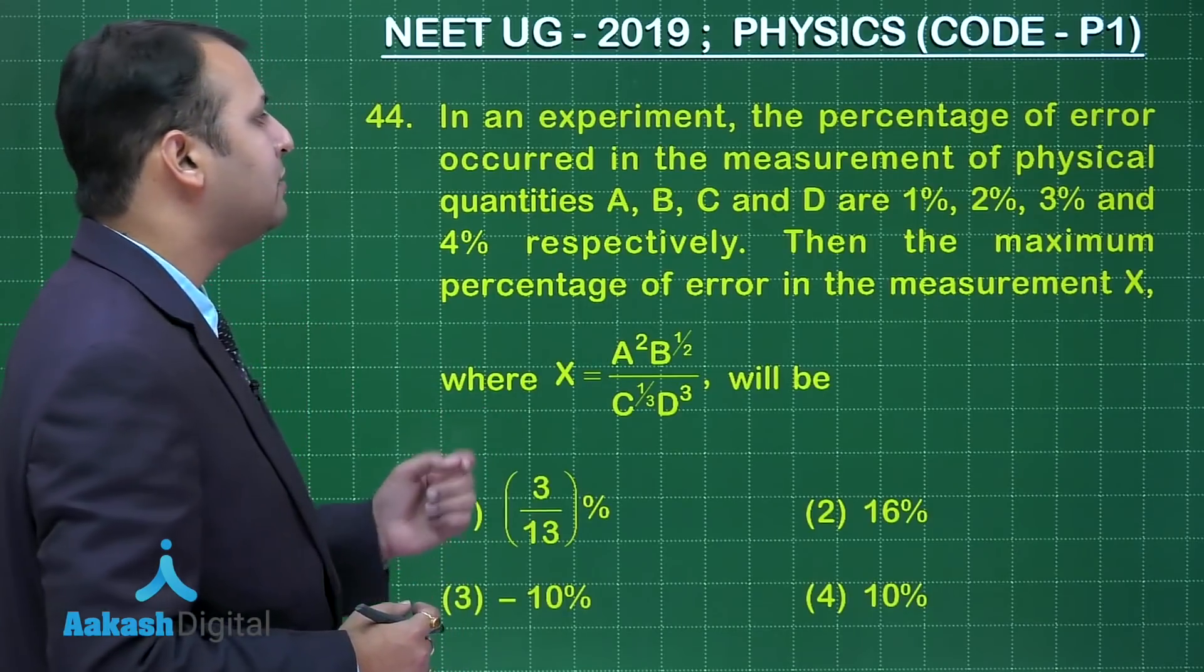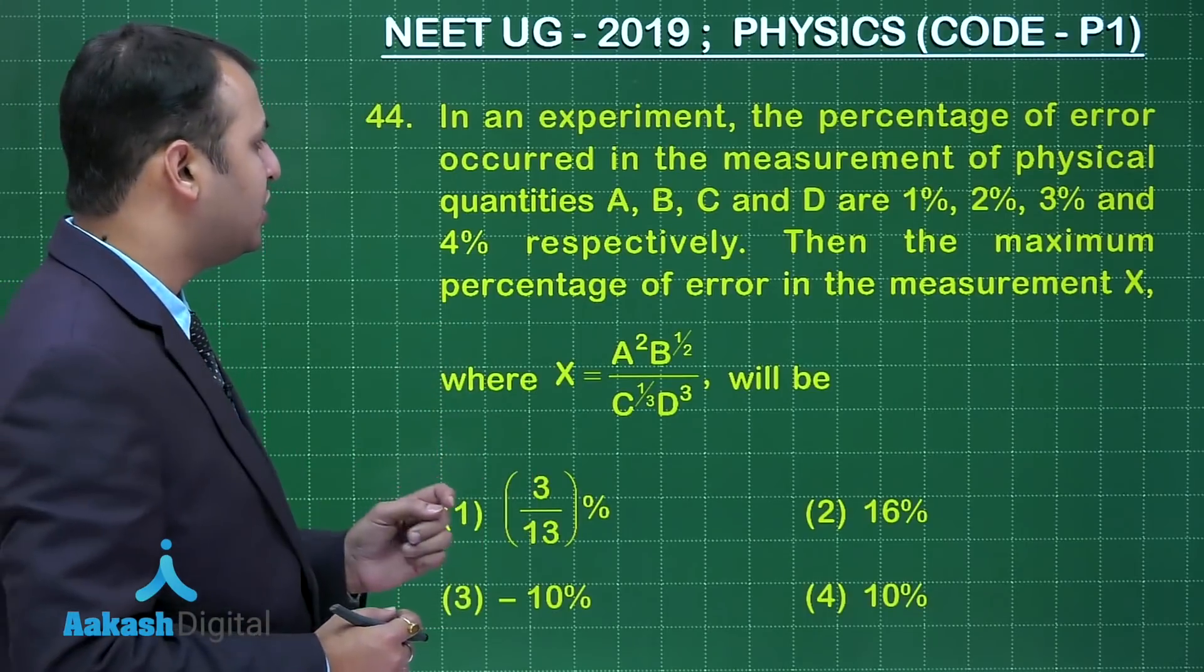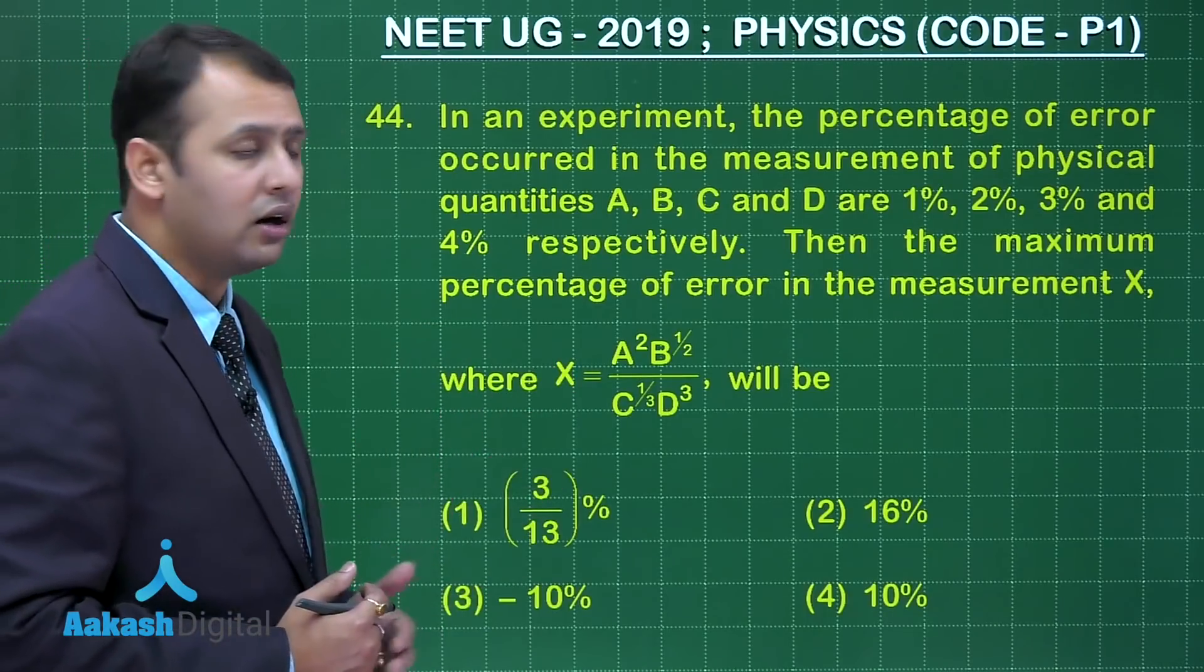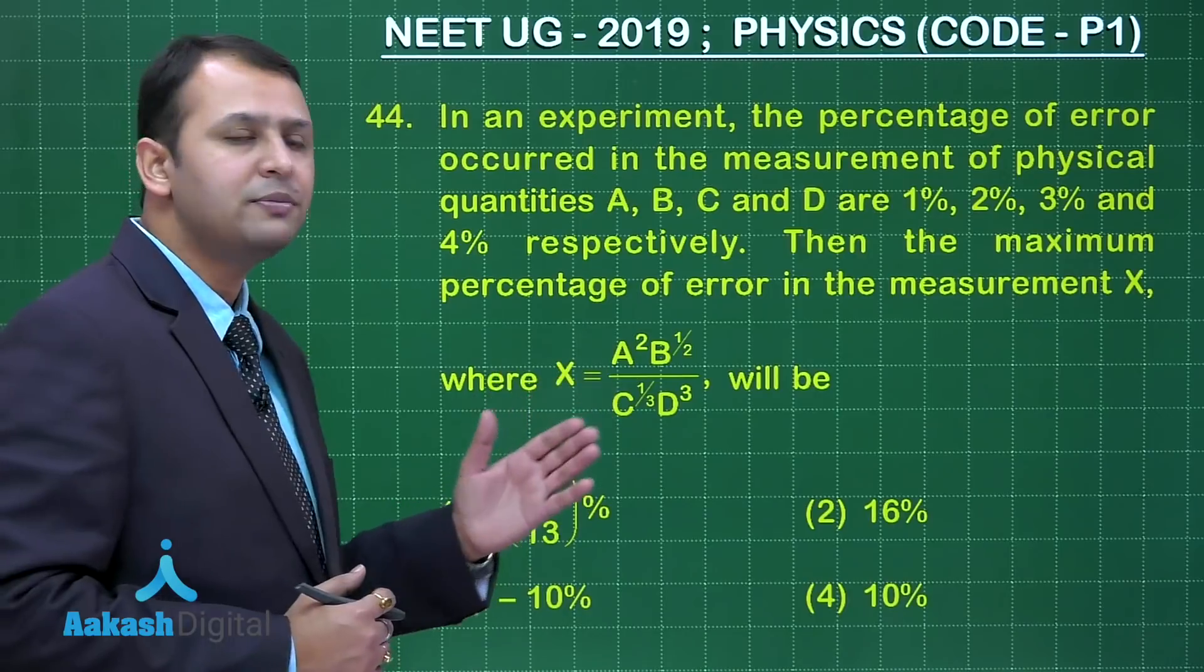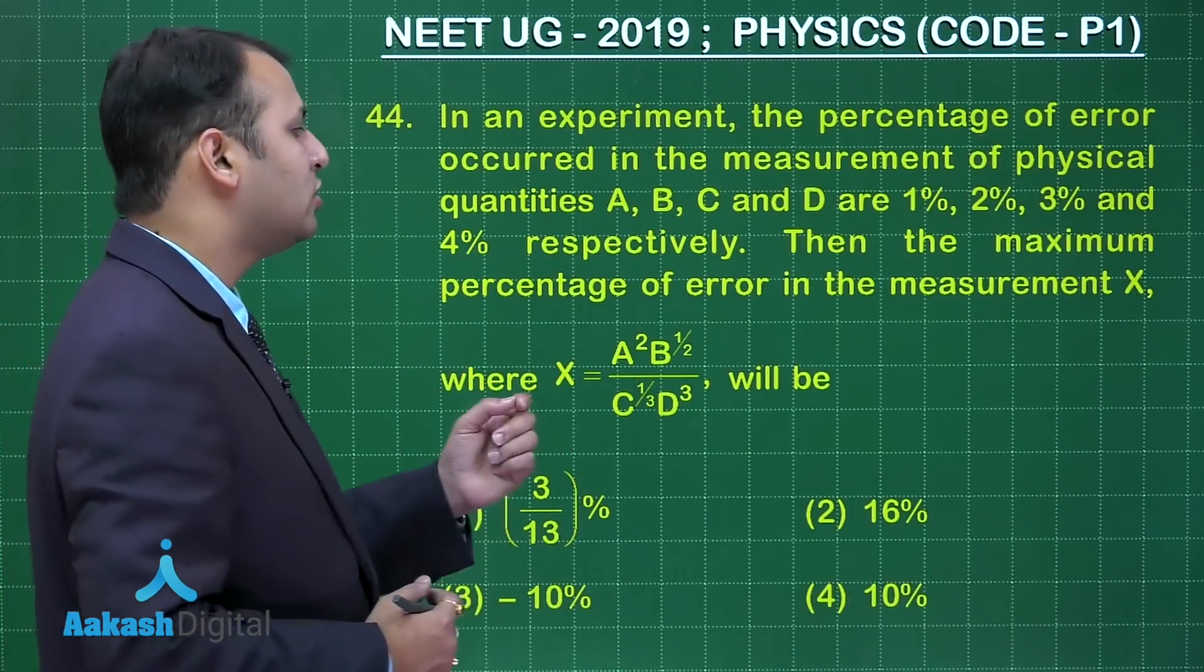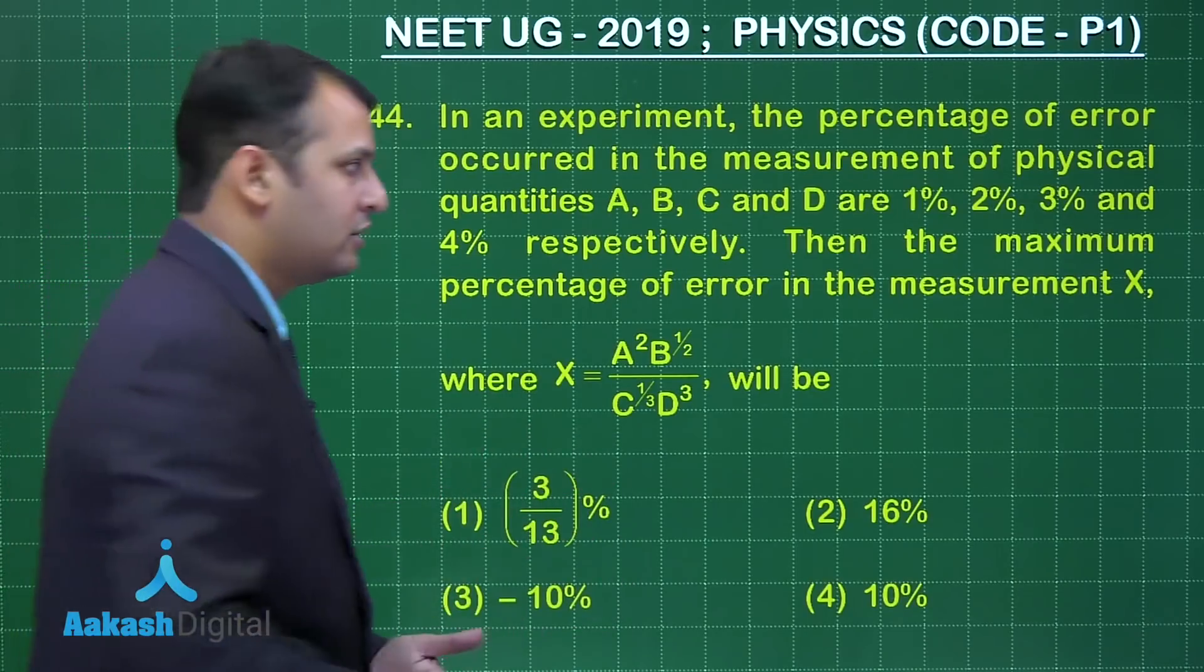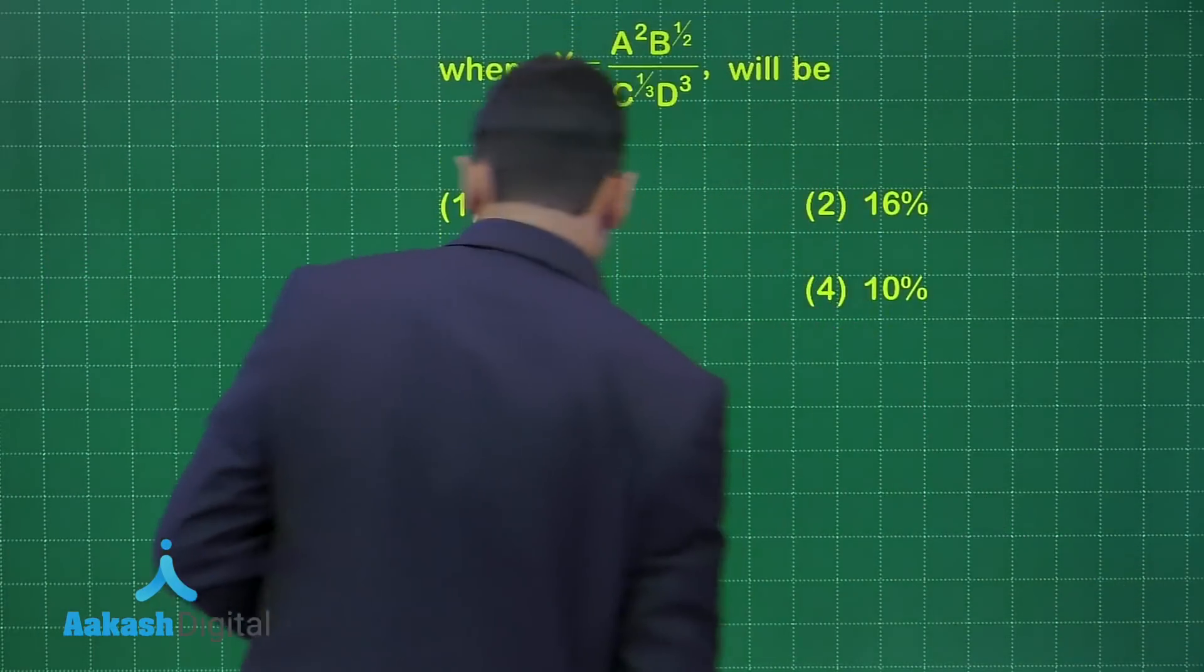As per the question, in an experiment the percentage of error occurred in the measurement of physical quantities A, B, C, and D are 1%, 2%, 3%, and 4% respectively. Then the maximum percentage of error in measurement of x if it is having this relation will be. So let's start with the solution.